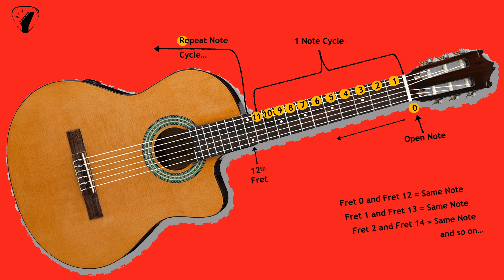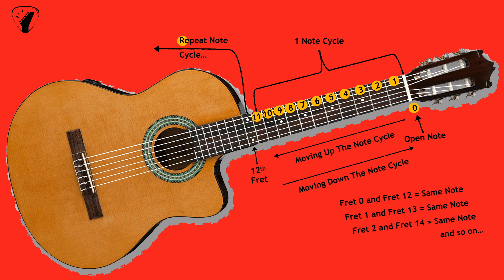When you move up the note cycle, you are basically playing the notes but at a higher pitch. When you move down the note cycle, you are playing the notes at a lower pitch. Basically, from the 12th fret the notes are being repeated.